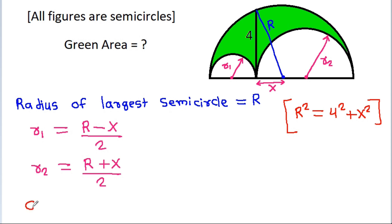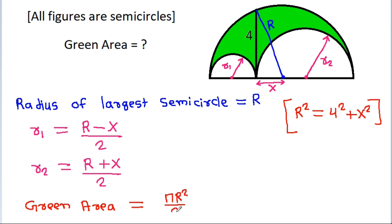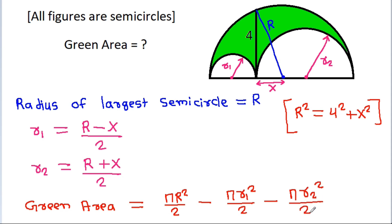And the green area will be equal to the area of the bigger semicircle minus the area of these two smaller semicircles. Then it will be (π R² / 2) minus (π R1² / 2) minus (π R2² / 2).